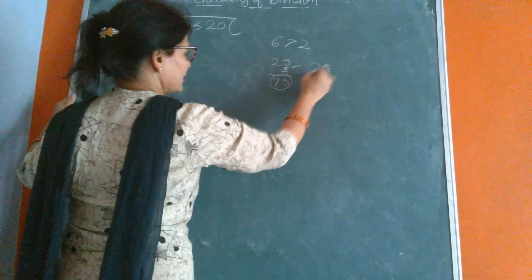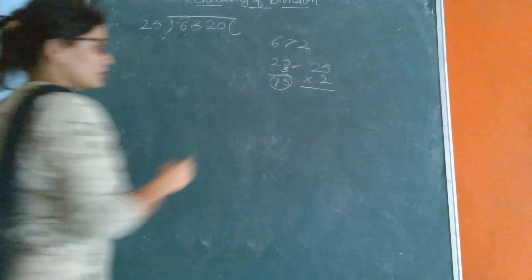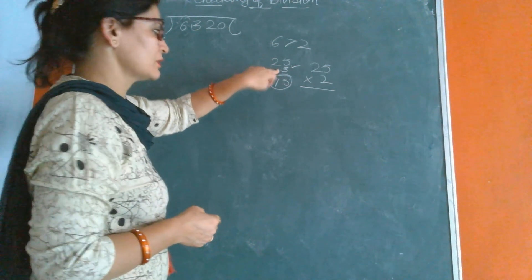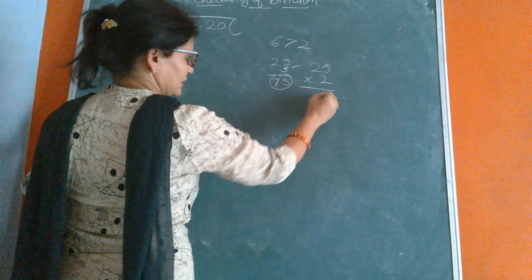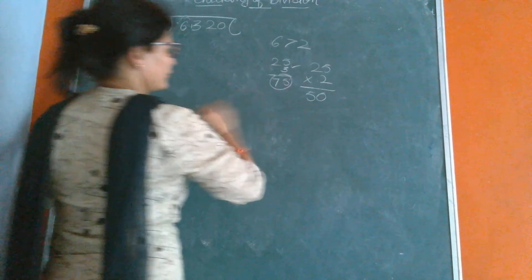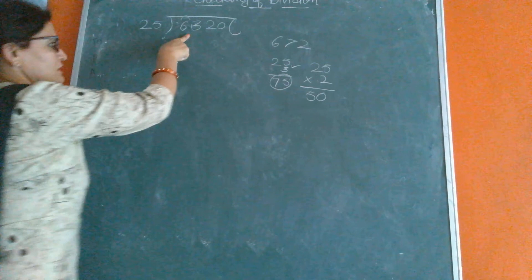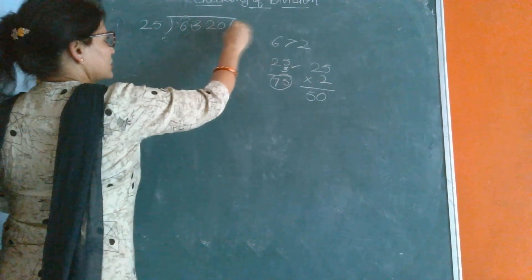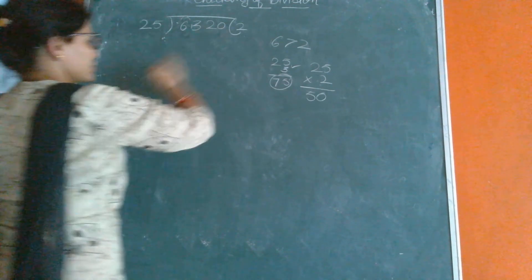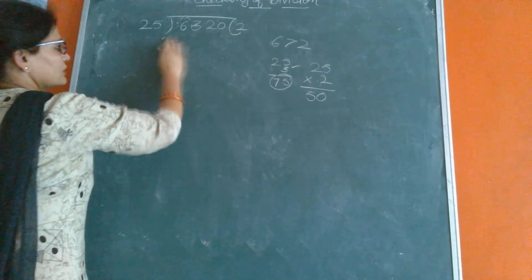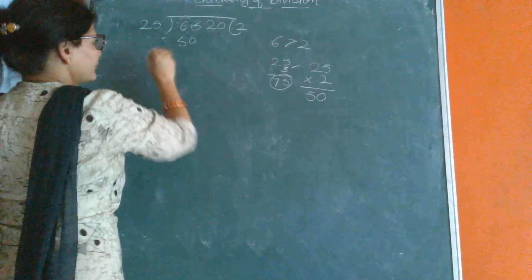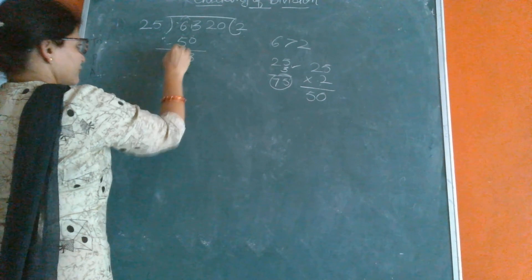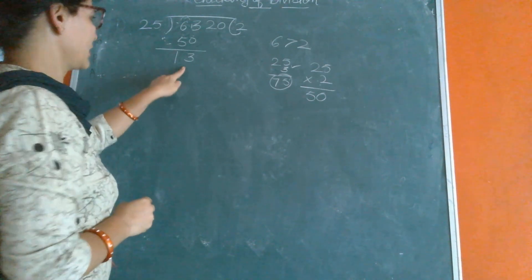Now we will take 2. 2 times 5 is 10, 2 times 2 is 4 plus 1 is 5, which is 50. 50 is less than 63, so it will go on 2. We will keep 2 in the quotient. 25 times 2 is 50. Now subtract it. 3 minus 0 is 3, 6 minus 5 is 1. Now there is remaining 13.